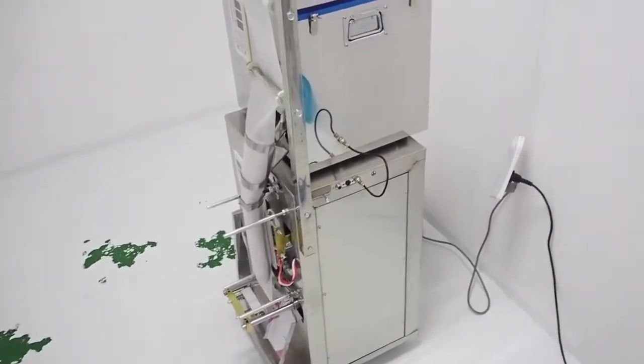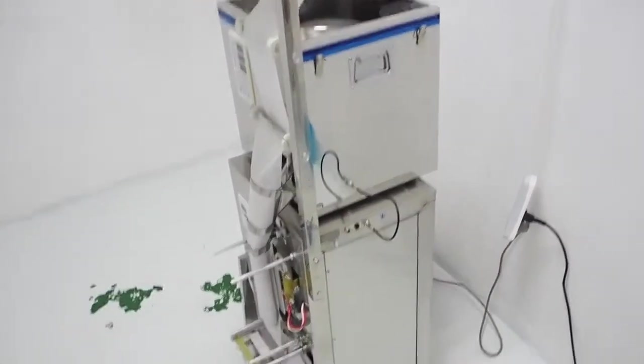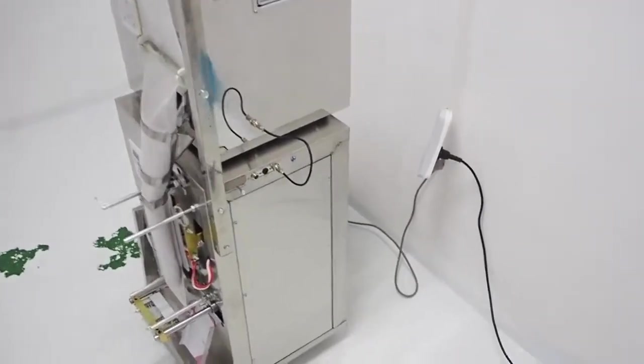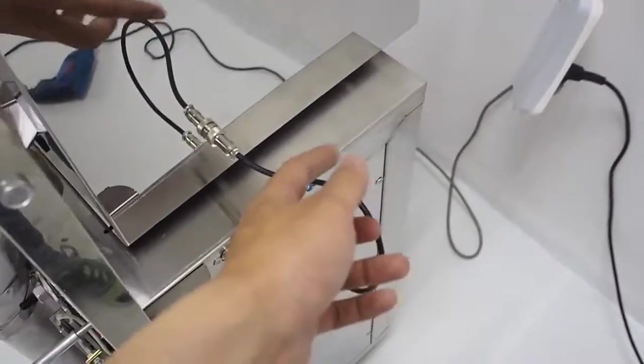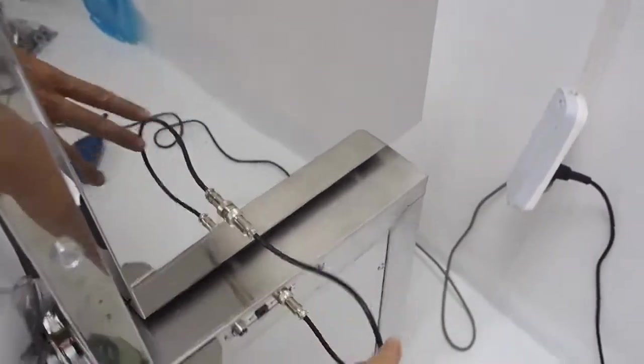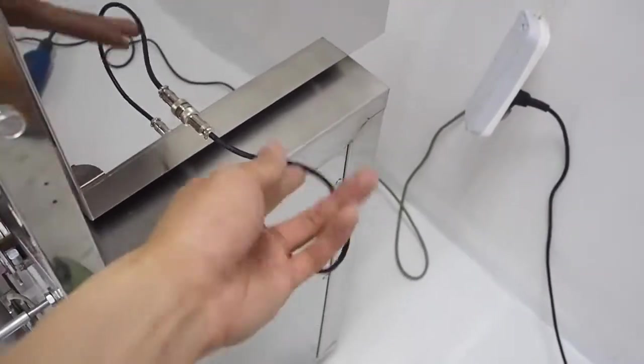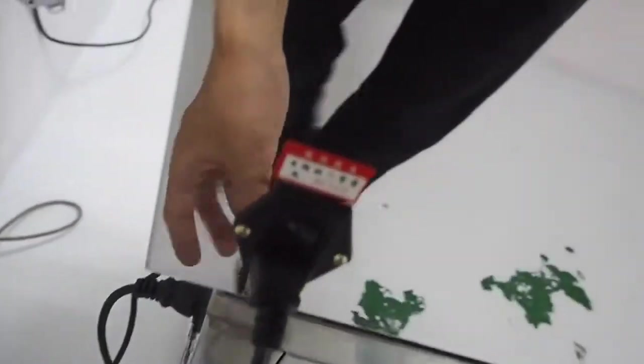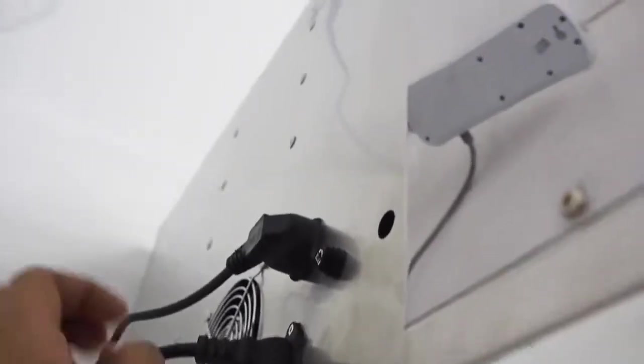The final step is to put our filling machine on top of this packing machine. As you can see, this is the signal cable which allows the filling machine to talk to this lower packing machine. And here is the power cord. This filling machine is actually drawing power from this lower packing machine.